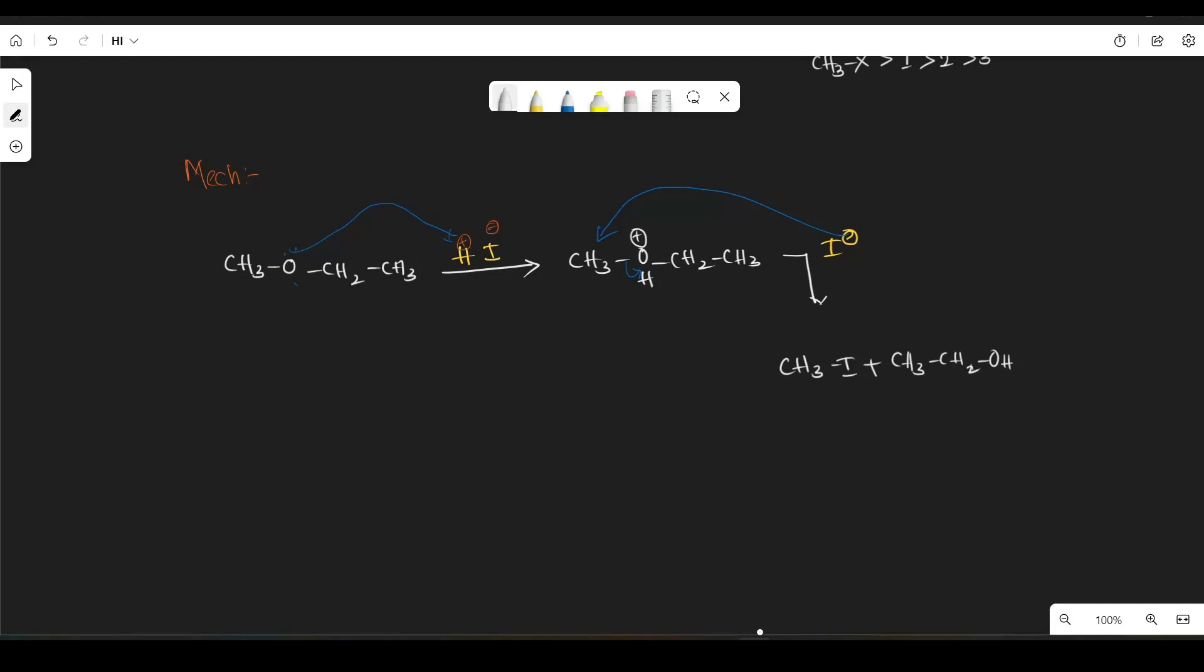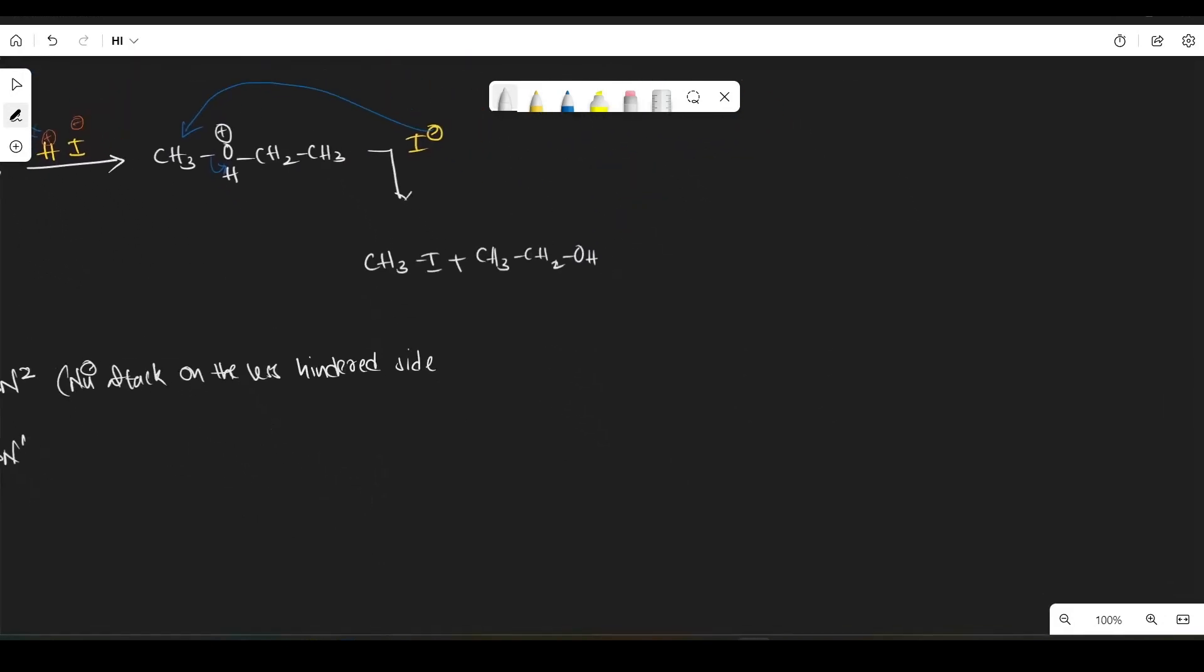So now let's see. We will do for primary and secondary, we will write the product according to SN2. Means that I- nucleophile attack on the less hindered side. See here we have done that only right? So in case of tertiary, in case of possibility of forming tertiary carbocation, then we have to do according to SN1. So now let me explain you that.